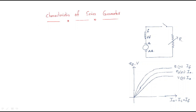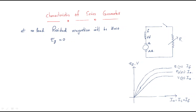At no-load condition, this is a very important point: the residual magnetism becomes zero. When the residual magnetism is zero, the EMF generated is also zero. If we plot Eg versus armature current, we start from the origin. Since armature current, load current, and field current are all in series, they are all equal: Ia = IL = If.